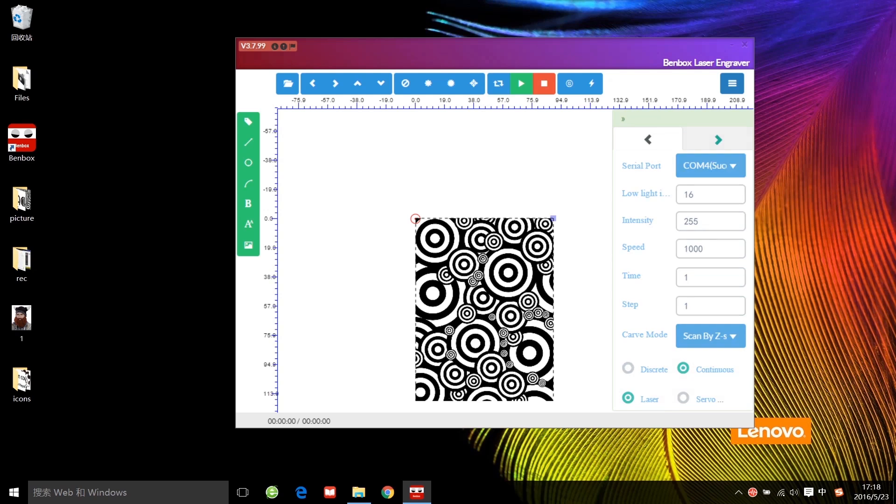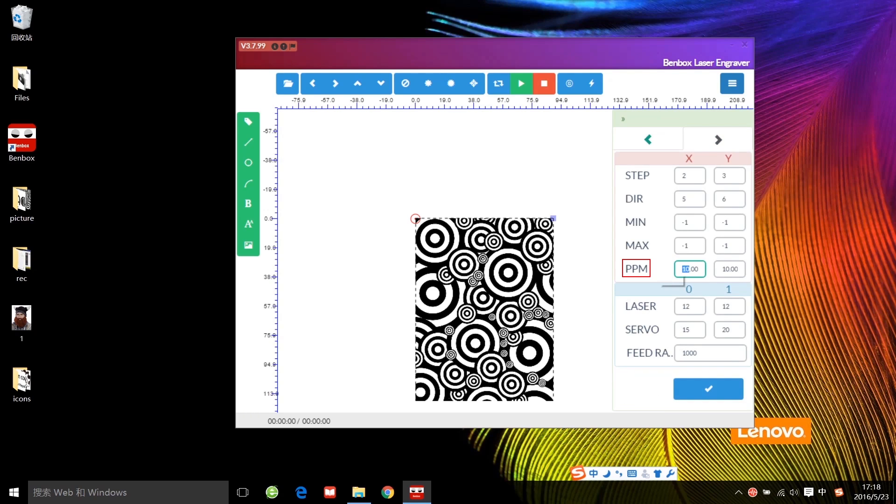Then press the next page. PPM 320, feed are 1000. These two parameters are suitable for most of the work.